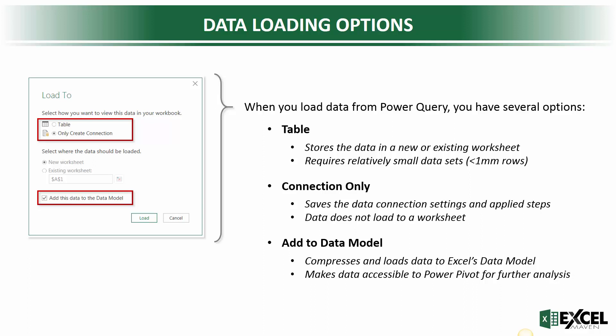The last option that we really care about here is the checkbox that says 'Add this data to the data model.' We are always going to check this box because we always want the data to be accessible as part of our model. When you check that box, it's going to take all that data, compress it, and load it into the model where it's accessible to us to create relationships and to eventually analyze with Power Pivot and with DAX. With that, let's get started with some basic table transformation tools.